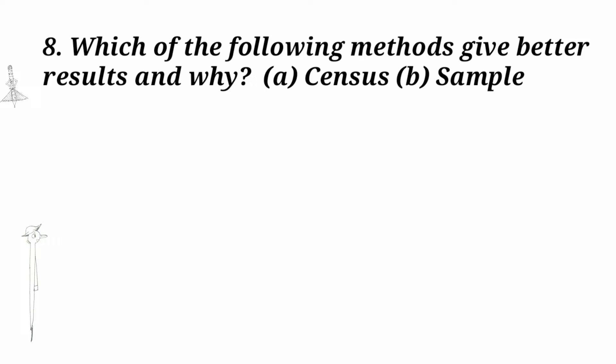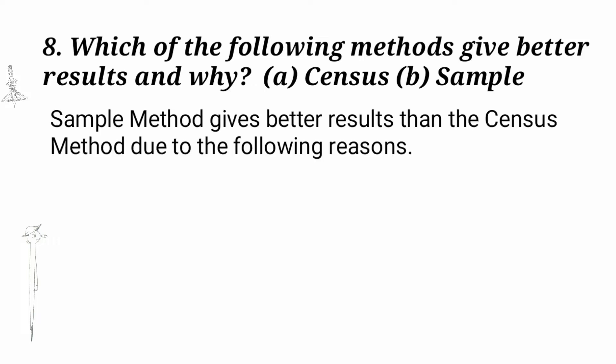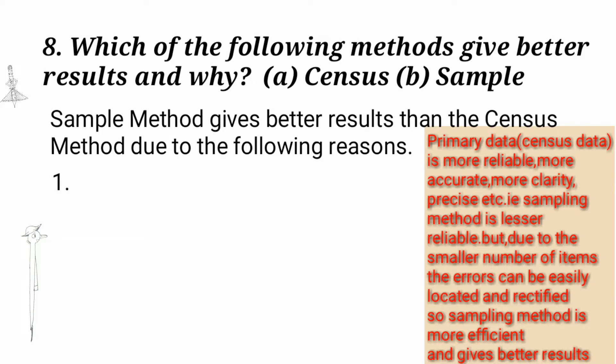Census or Sample? The Sample method gives better results than the Census method due to the following reasons. 1. Accuracy: Primary data or Census data is more reliable, more accurate, and more precise. That is, the Sample method is lesser reliable. But due to the smaller number of items, the errors can be easily located and rectified. So, the Sample method is more efficient and gives better results.